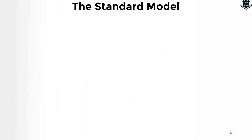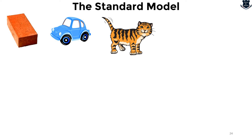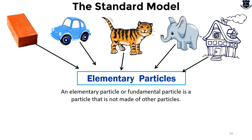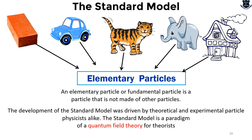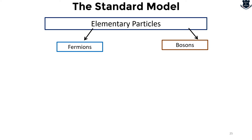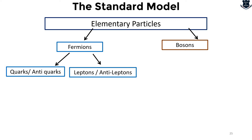All the elements we see in nature — a brick, a car, a cat, a house — can be broken down into elementary particles. A fundamental particle is one that is not made of other particles. The standard model, driven by theoretical and experimental particle physics, is a paradigm of quantum field theory for theorists. Elementary particles have two parts: fermions and bosons. Fermions comprise quarks, antiquarks, leptons, and antileptons. Bosons comprise gauge bosons and scalar bosons.